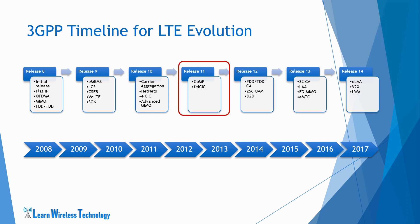In Release 11, the CoMP feature, i.e. Coordinated Multipoint, and the FeICIC feature, i.e. Enhanced Inter-Cell Interference Coordination, further improved the capacity of 4G.